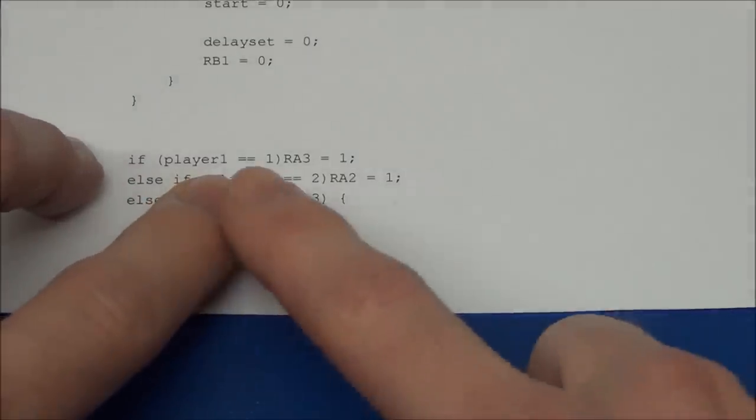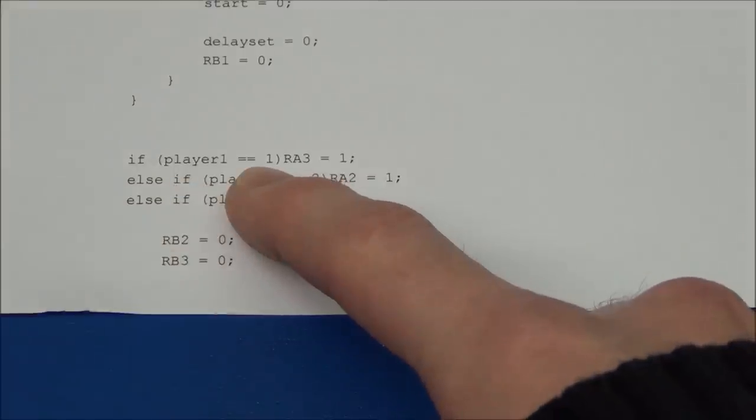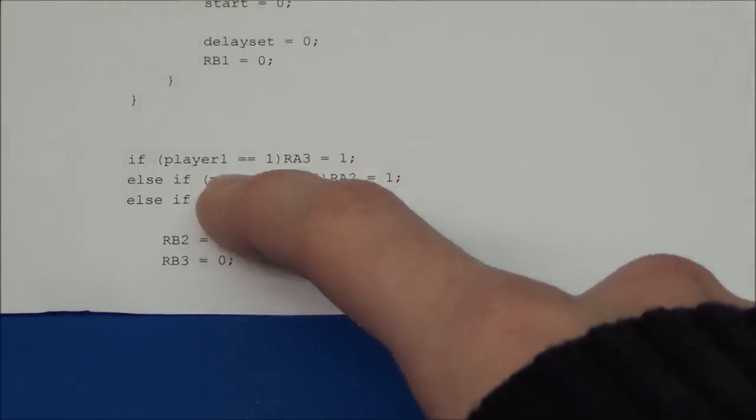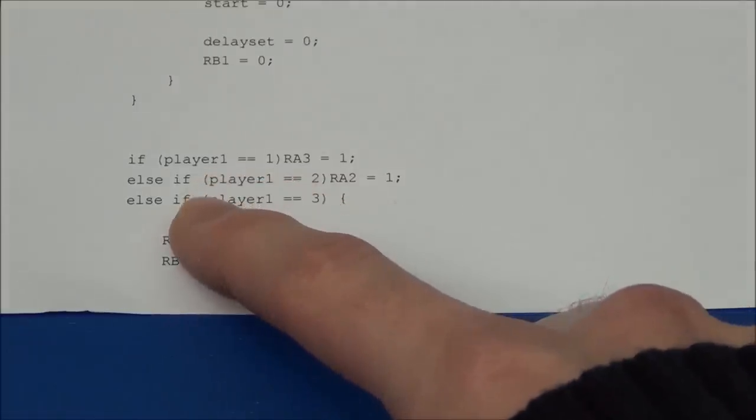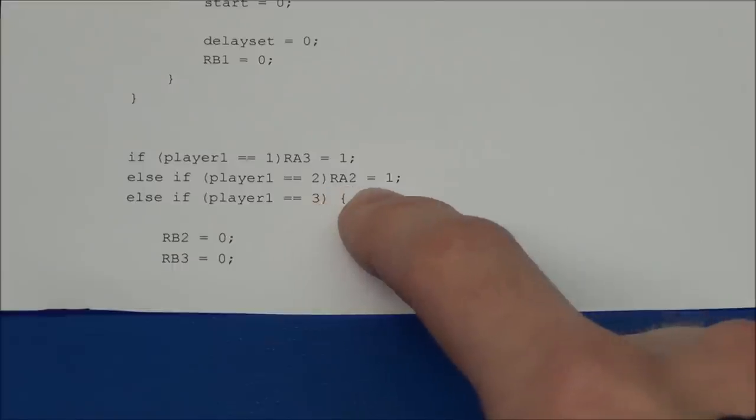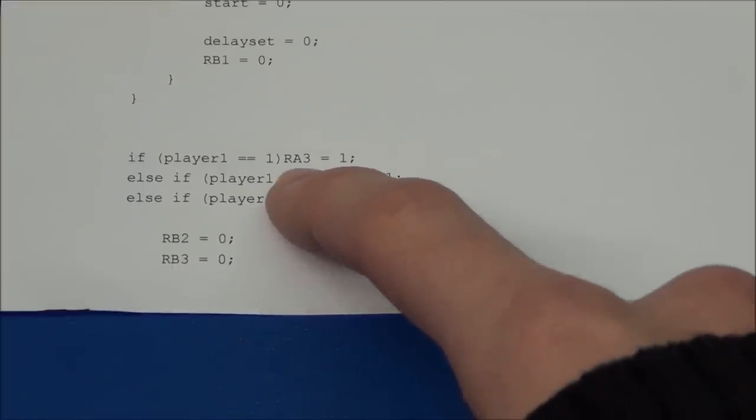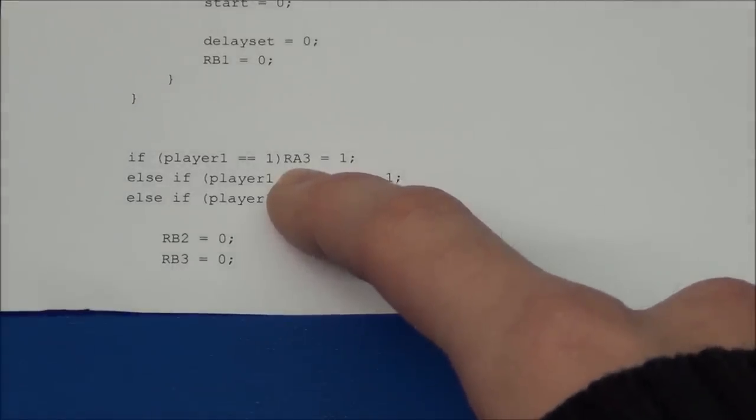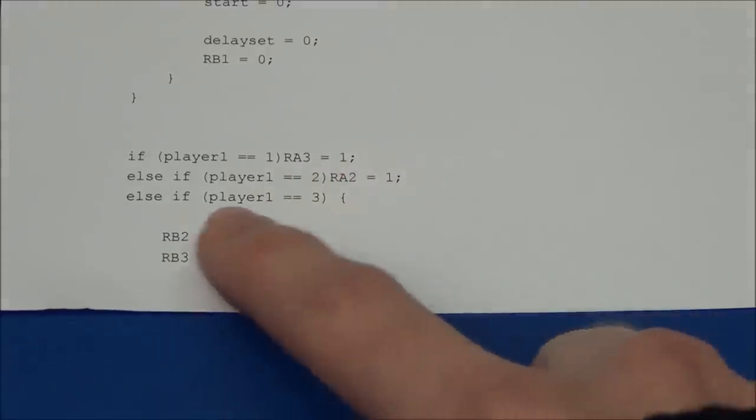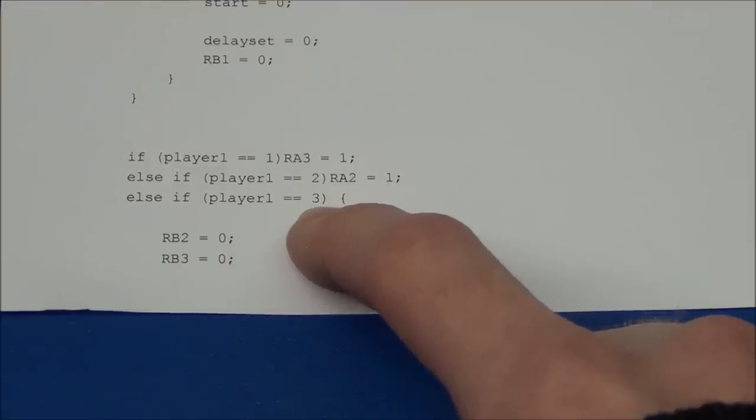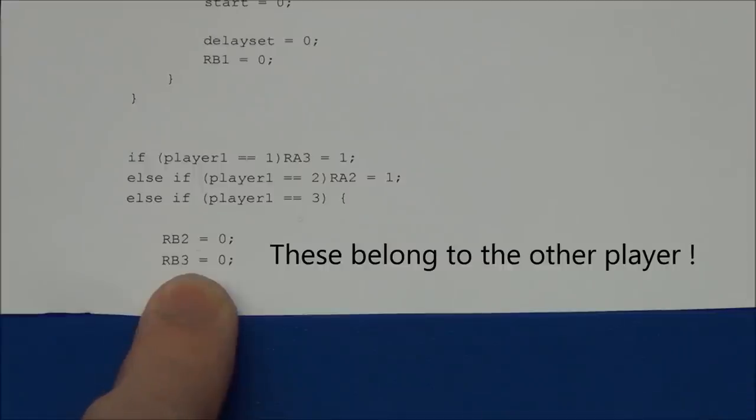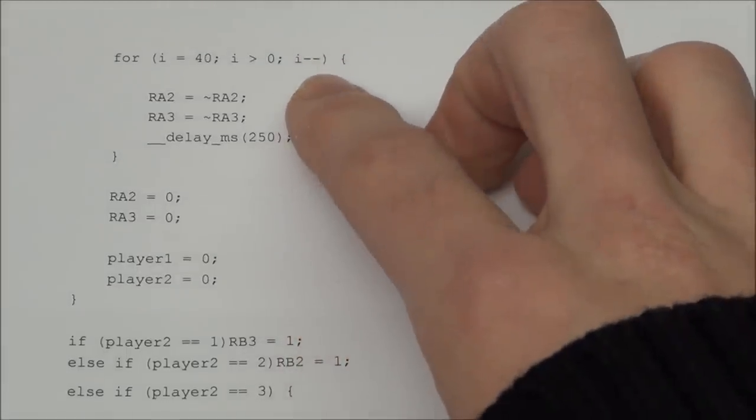And down here we check if player 1 equals 1. If it does then the first LED will light up so we can see that that player has got a point. And if it equals 2, then this will light up. And it will of course remember the first point as well because we have not turned that one off yet. And if player 1 has got 3 points it will flash the LEDs by turning both off and then entering this for loop.